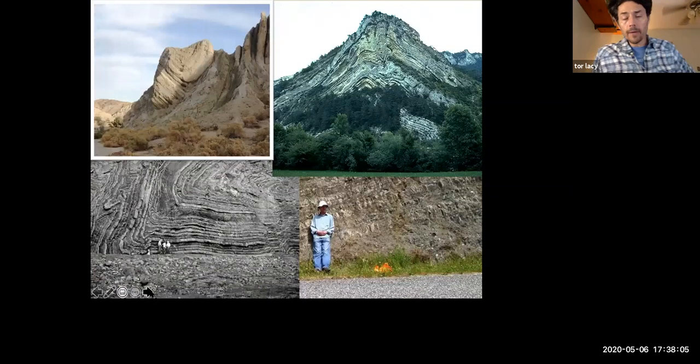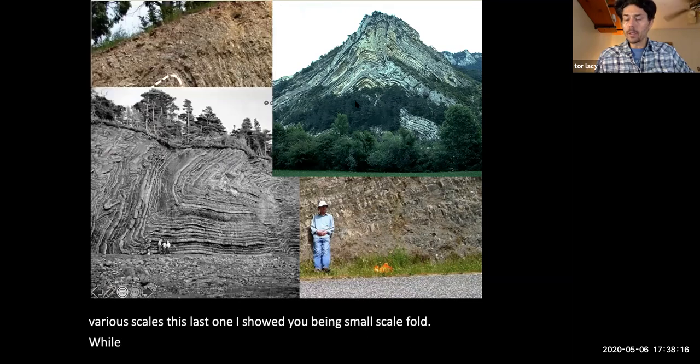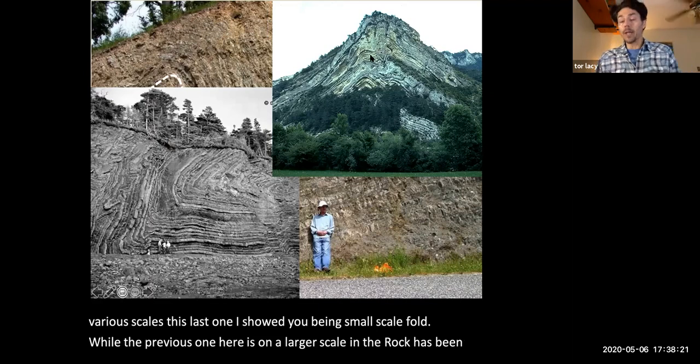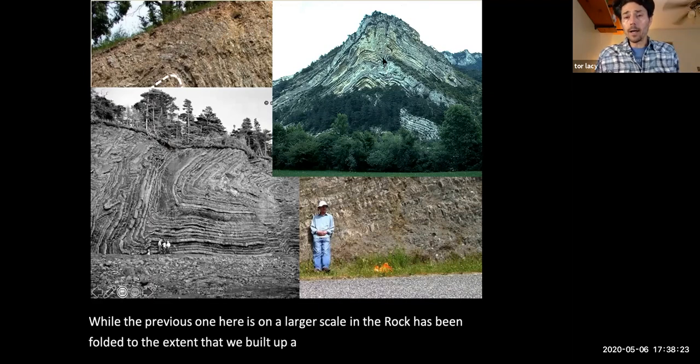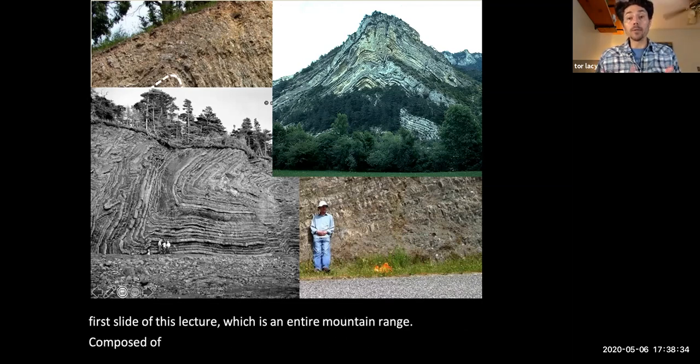So here we have various examples of the rock being bent or tilted at various scales. This last one I showed you being a small scale fold, while the previous one is on a larger scale and the rock has been folded to the extent that we've built up a mountain. This is similar to the first slide of this lecture, which is an entire mountain range created because of the bending of the rock.